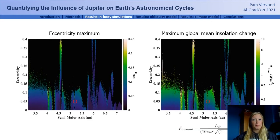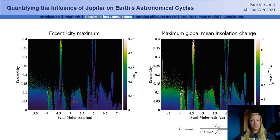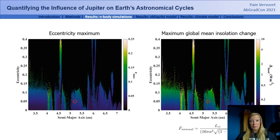Since the annual global mean insolation that the Earth receives is directly a function of eccentricity, we can calculate the maximum change in insolation. For a modern Earth, insolation varies by roughly 0.5 watts per square meter between eccentricity maxima and minima, and this has been driving great climatic fluctuations like the glacial-interglacial cycles. In some of our simulations, the difference in insolation can reach two or even five watts per square meter, which could have massive implications for climate variability on Earth's surface.